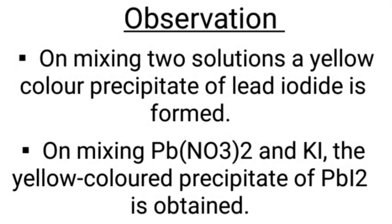Observation. On mixing the two solutions, a yellow colored precipitate of lead iodide is formed. On mixing lead nitrate and potassium iodide, the yellow colored precipitate of lead iodide is obtained.